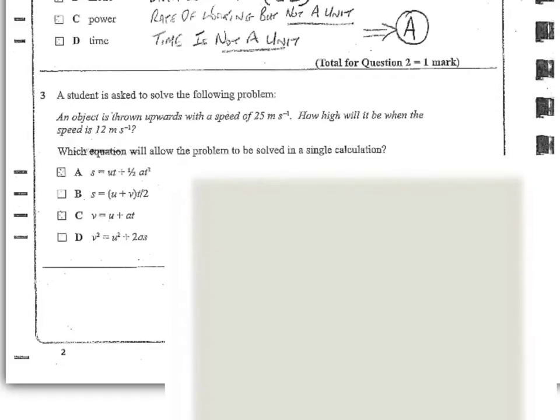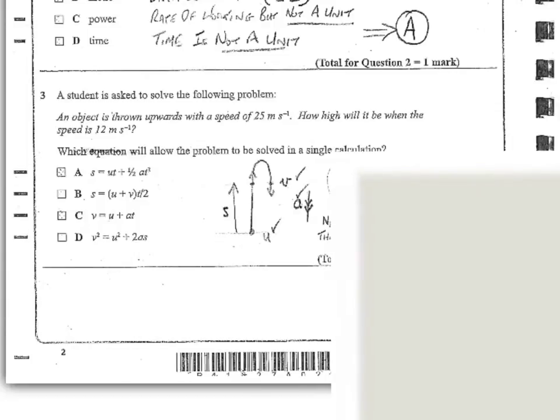Question three. A student is asked to solve the following problem. An object is thrown upwards with a speed of 25 meters per second. How high will it be when the speed is 12 meters per second? And which equation here will allow the problem to be solved in a single calculation? So let's just draw out what's happening. We know certain things about this. So we have a value for U, we have a value for V, these are both given. We know A because of gravity gives us our value for A. And we're interested in S.